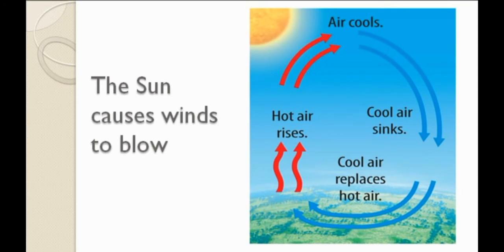The movement of wind is affected by the heat of the sun. The heat of the sun heats up the air, and after heating, the air becomes lighter and it rises. As you can see in the picture, the hot air rises and the cool air, which is heavier, moves in to take its place. This is the way the winds blow.